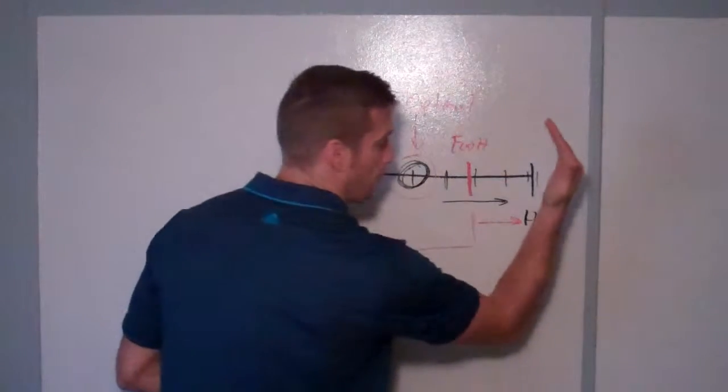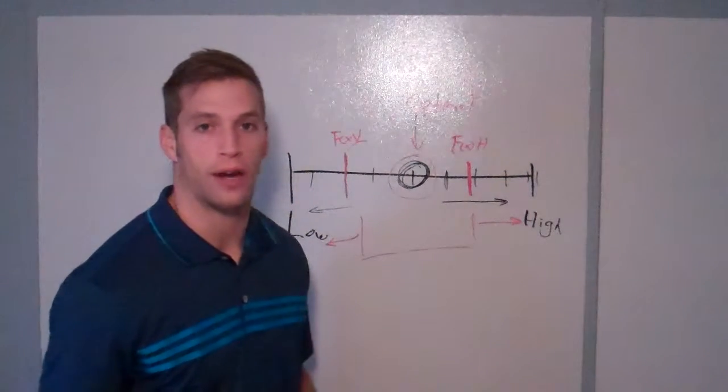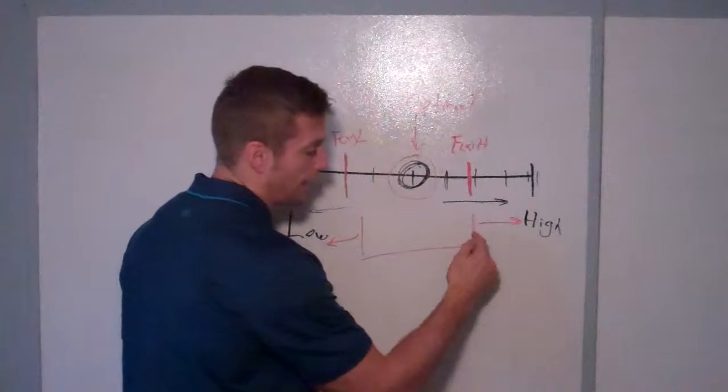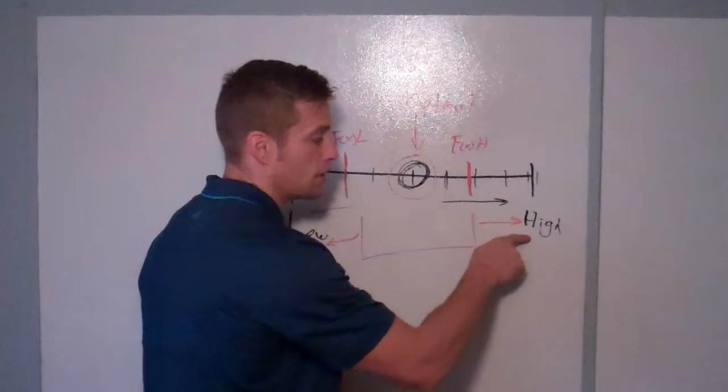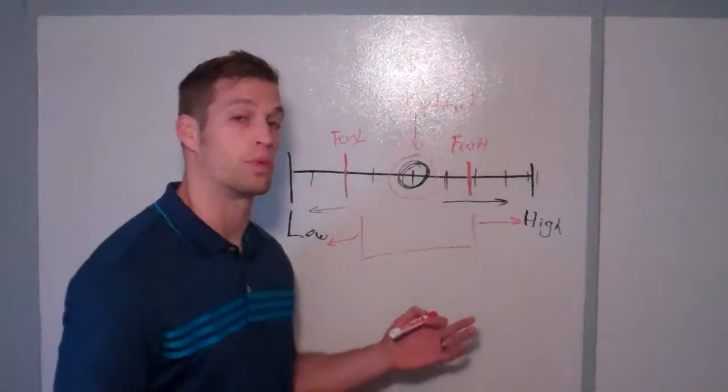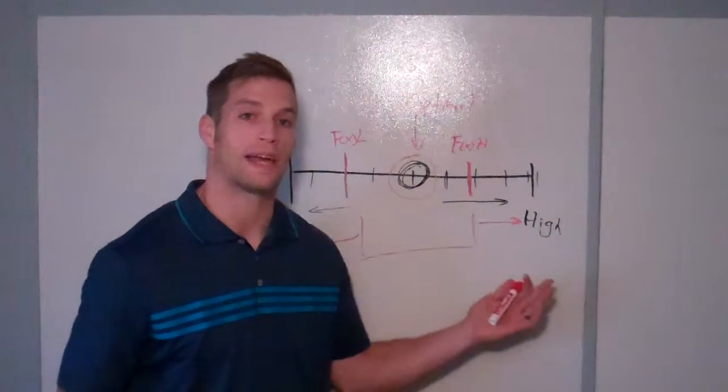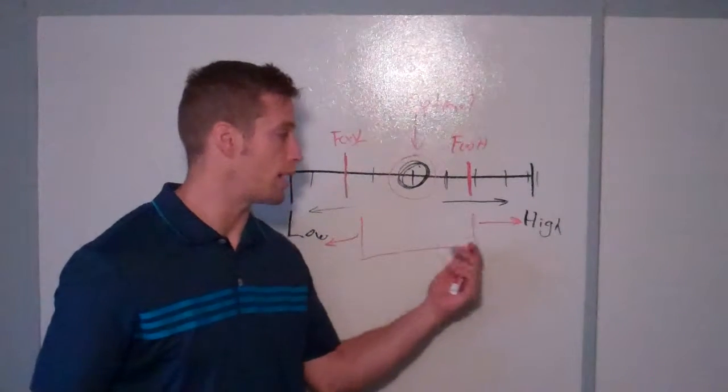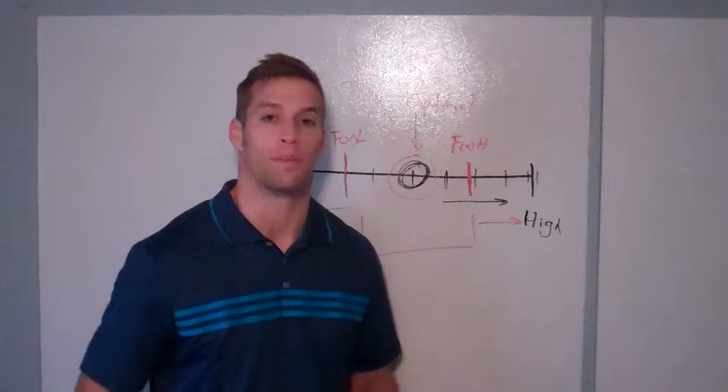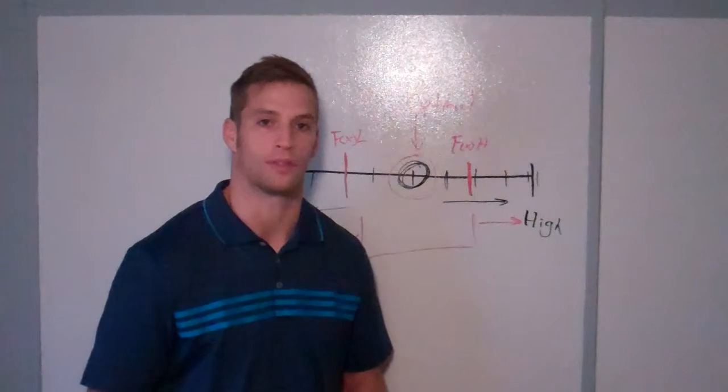So instead of waiting until bam, you're diagnosed with hypothyroidism, we'll say, hey, you're outside optimal and you've been trending your last few tests towards hypothyroidism. Should we wait for you to be diagnosed, or should we take action to naturally reverse that trend and bring you back towards optimal, back towards balance, back towards homeostasis?